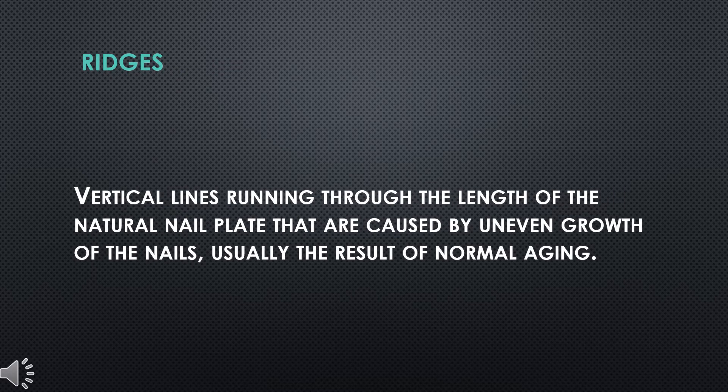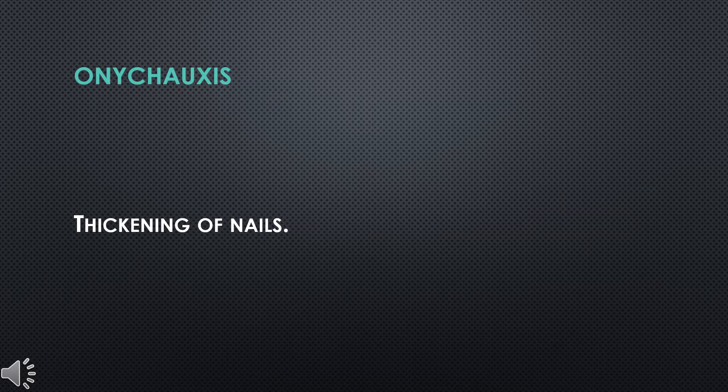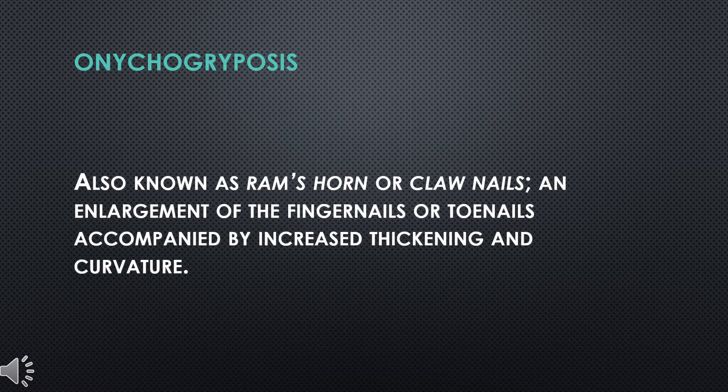Ridges: Vertical lines running through the length of the natural nail plate that are caused by uneven growth of the nails, usually the result of normal aging. Splinter Hemorrhage: Hemorrhage caused by trauma or injury to the nail bed that damages the capillaries and allows small amounts of blood flow. Onychausis: Thickening of nails. Onychogryphosis: Also known as ram's horn or claw nails, an enlargement of the fingernails or toenails accompanied by increased thickening and curvature.